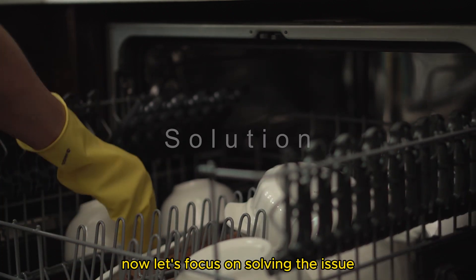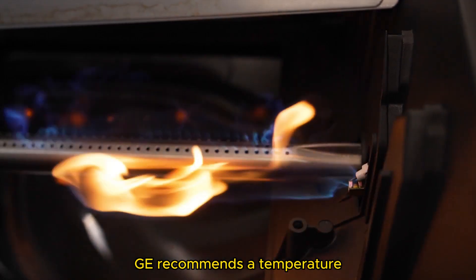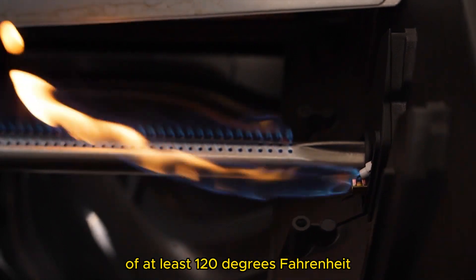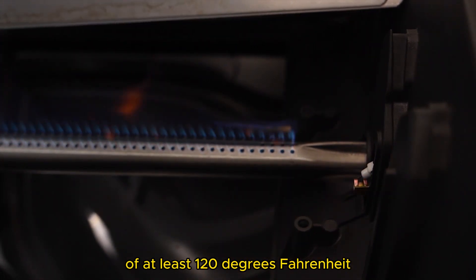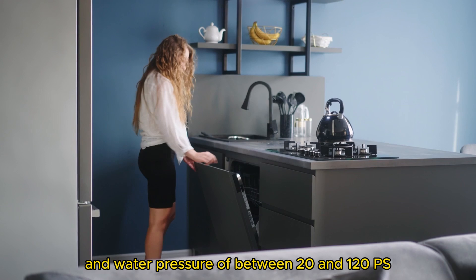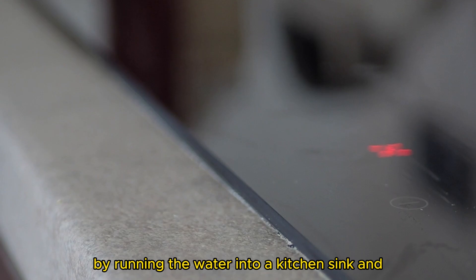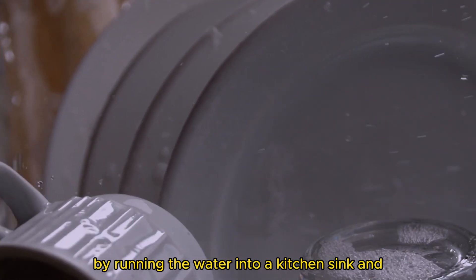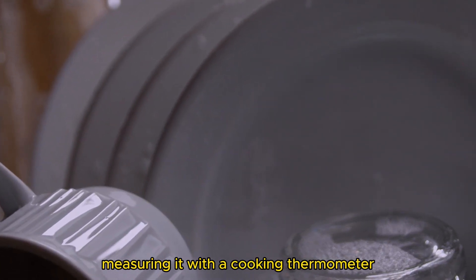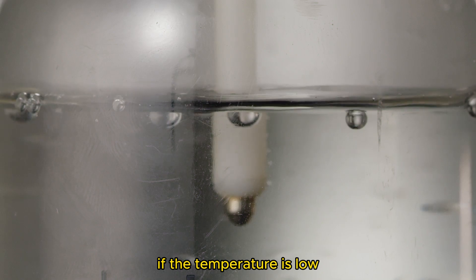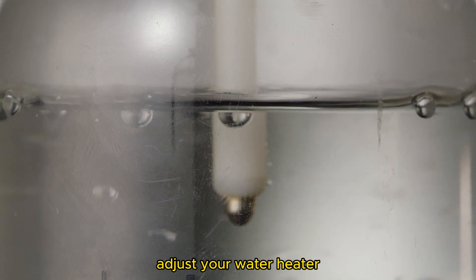Now, let's focus on solving the issue. Ensure optimum water pressure and temperature. GE recommends a temperature of at least 120 degrees Fahrenheit and water pressure of between 20 and 120 PSI. Check the water temperature by running the water into a kitchen sink and measuring it with a cooking thermometer. If the temperature is low, adjust your water heater.